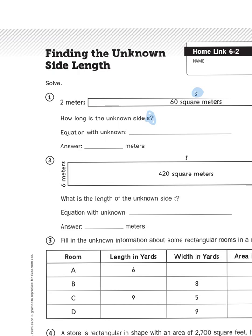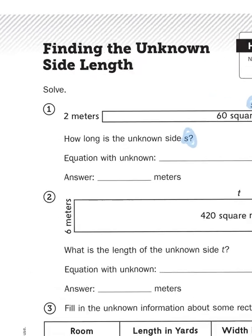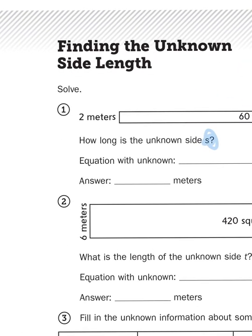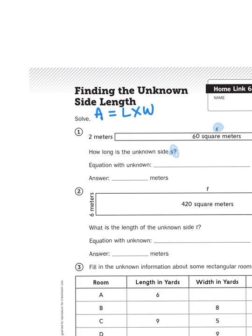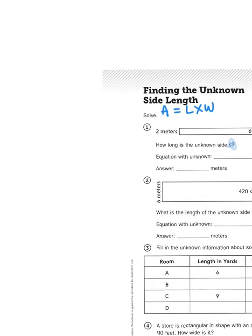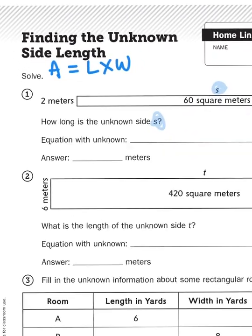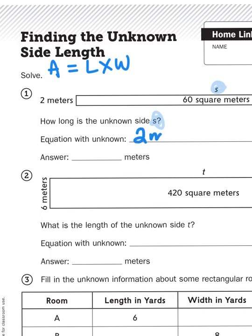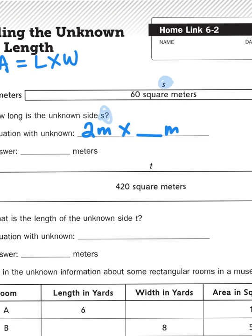When determining the area of a rectangle, we have to remember that area equals length times width. If we're not given one of the measurements, in this case the length, it's like a multiplication problem with a missing factor.